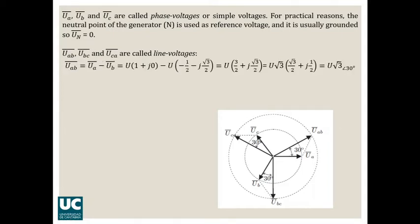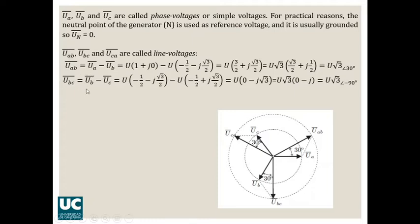We can do exactly the same with line voltage UBC, which is the difference between UB and UC. Here you have the direction of each of the particular phasors of the phase voltages, and that was obtained as the cosine of the angle in the real part and the sine of the angle in the imaginary part. If you do the calculation, you are going to get that UBC has an absolute value of U multiplied by square root of 3, and its angle is minus 90 degrees, so this phasor here.